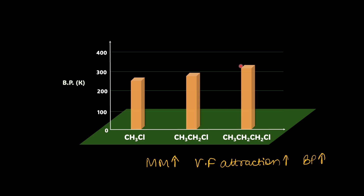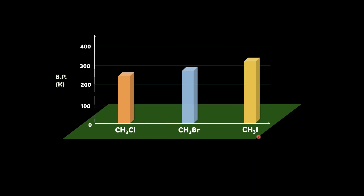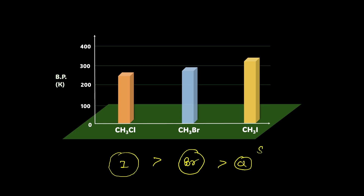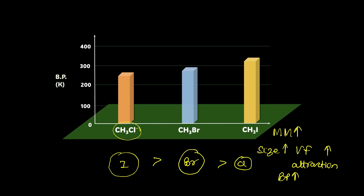Now let's fix the alkyl chain at one carbon and take methyl chloride, methyl bromide, and methyl iodide. The size of the halogen is increasing — iodine is maximum, then bromine, and the smallest is chlorine. Since the size increases, the van der Waal forces of attraction also increase, and so the boiling point increases. The molar mass increases from methyl chloride to methyl iodide, and methyl chloride has the least boiling point while methyl iodide has the highest.